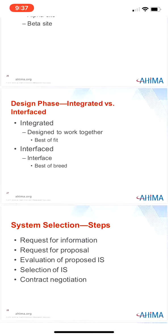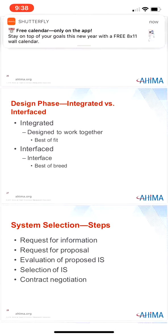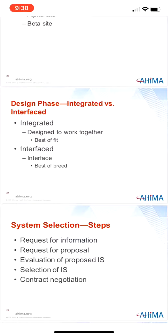Interfaced information systems have products that are not designed to work together but are linked through an interface. An interface takes data from one system and plugs it into another — it acts as a bridge between two information systems or databases to translate data into each system's respective language. An interface must know what data to retrieve, where the data are located in the first database, whether any manipulation must be performed, and where the data will be entered in the second database. Many healthcare facilities choose this method because users can choose the various products they want instead of being limited to a single vendor's product. Choosing the information system based on functionality rather than by vendor is called best of breed.